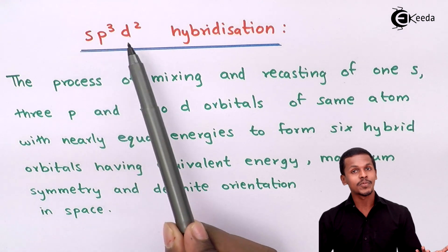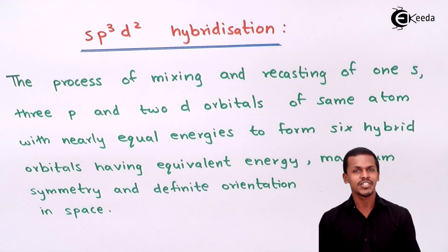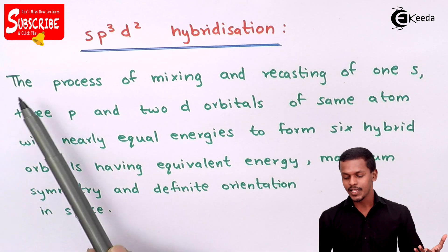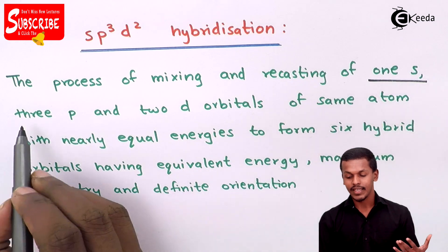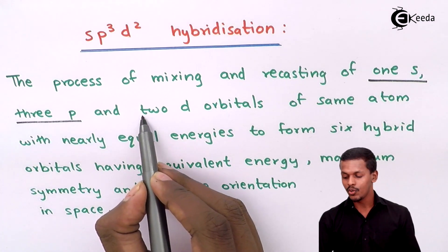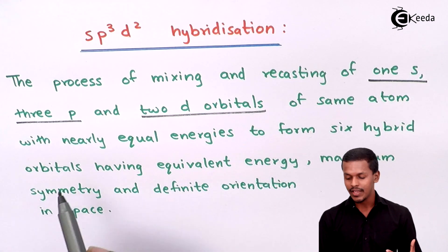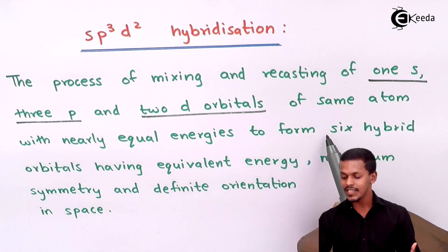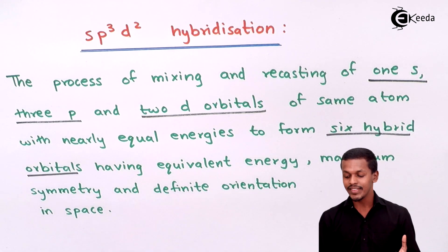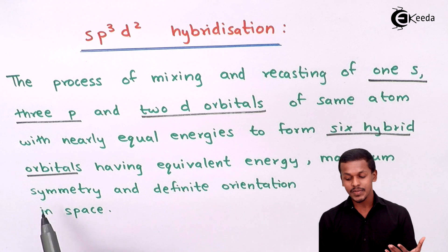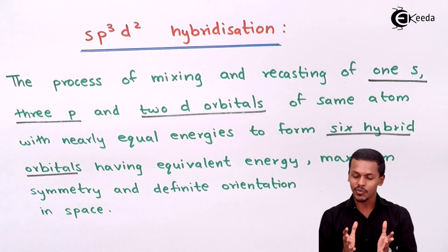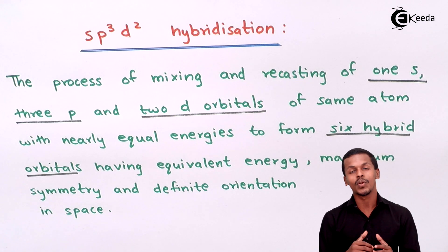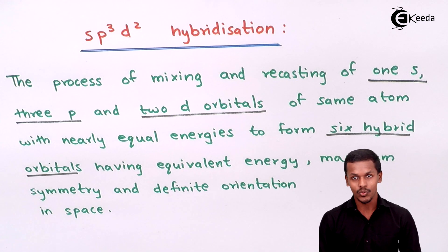We are talking about SP3D2 hybridization. Similar to what we did in the previous lecture, this is the process of mixing and recasting of 1S, 3P, and 2D orbitals of the same atom — with nearly equal energy — to form 6 hybrid orbitals having equivalent energy, maximal symmetry, and definite orientation in space. This process is known as SP3D2 hybridization.